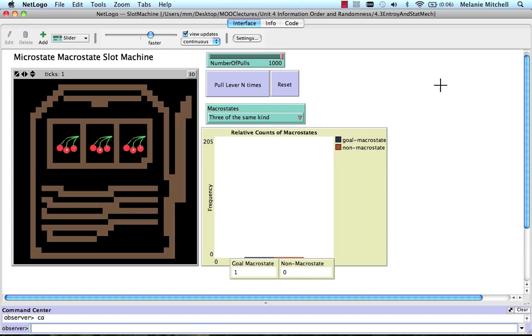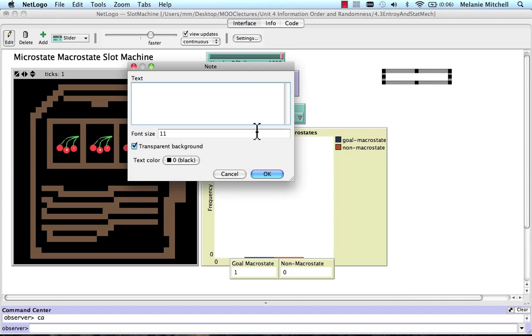Well, let's figure that out. And I'm going to do that by writing a note. Okay, so my note is going to say, probability of seeing macrostate three of the same. Well, we said that there were five microstates that were included in that macrostate,